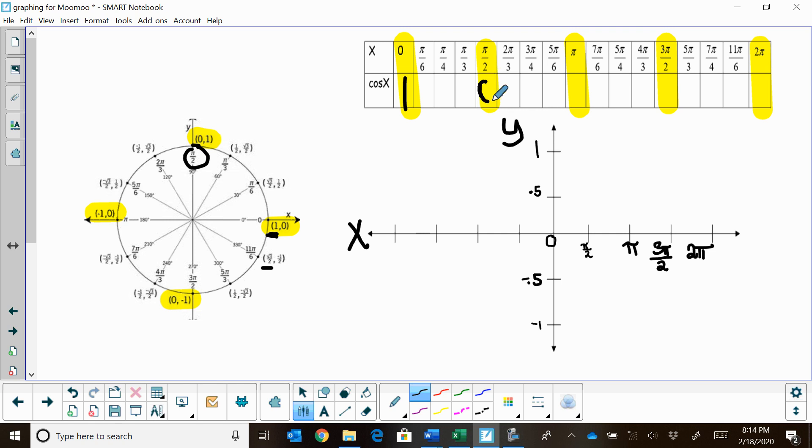Cosine of π is the next one. Cosine of π, that's negative 1. Cosine at 3π/2, that's back to 0. And then cosine of 2π—that's the entire circle—we're back to where we started, so that's 1.